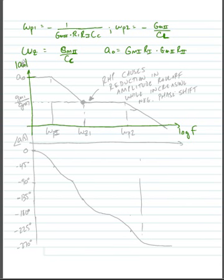Starting at, or sorry, magnitude of A of s. Starting at DC, our gain is equal to A zero.